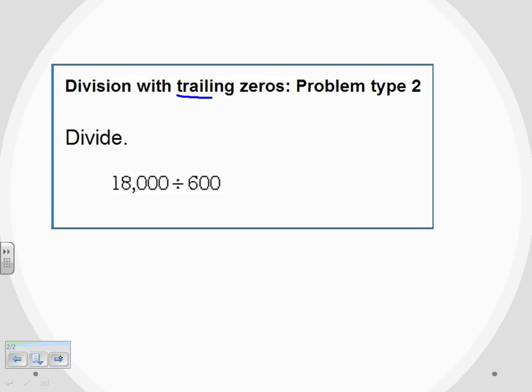So both the 18,000 and the 600 both have those trailing zeros, so what that means is we can kind of cancel them out.